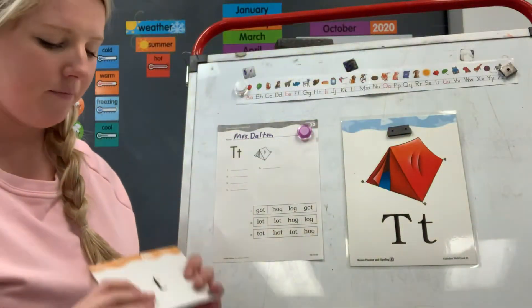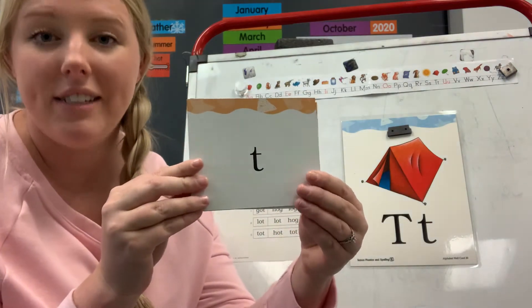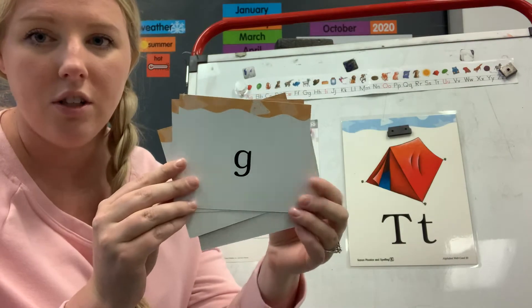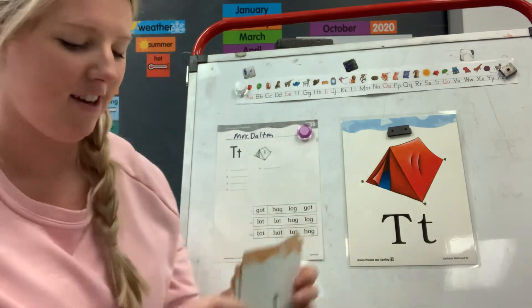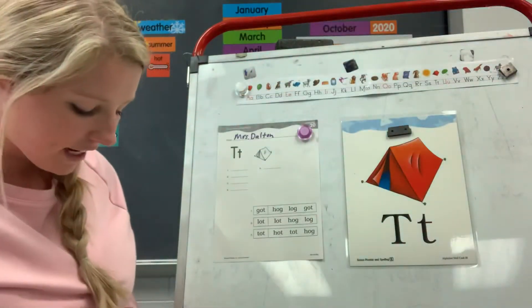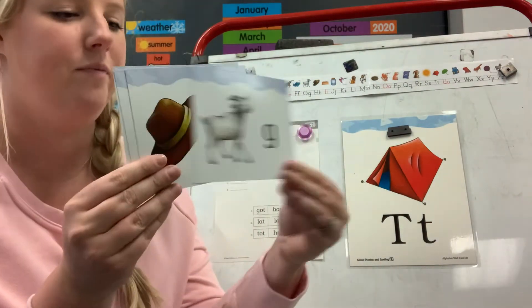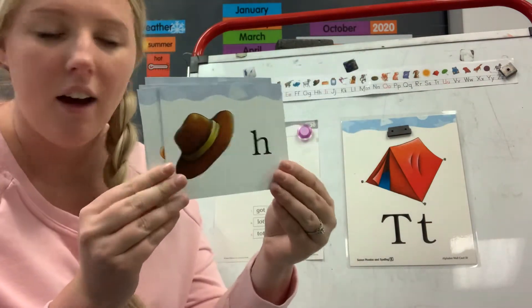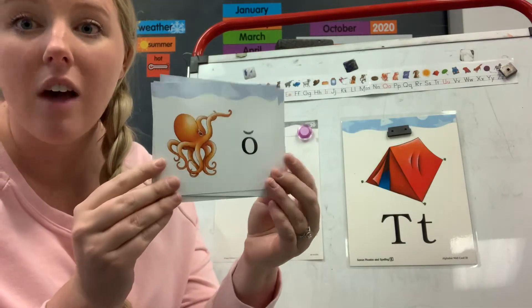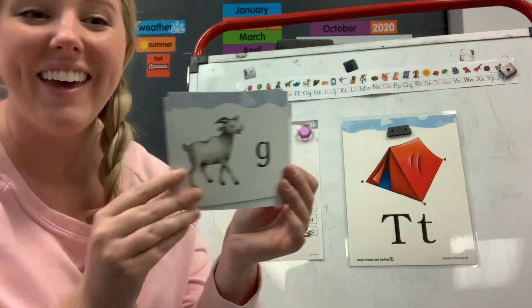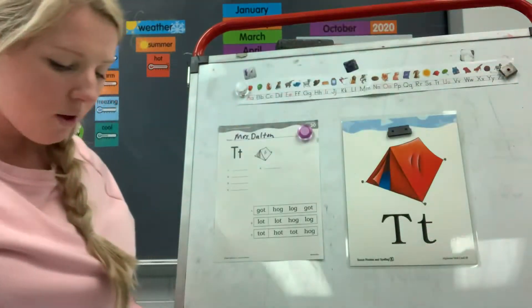All right, tell me my letters. T, H, O, G. Good, we're back at the beginning. All right, tell me my keyword picture and sound. Goat G, Hat H, Octopus ah, Tent T. Good, we're back at the beginning. Okay, my